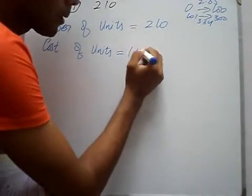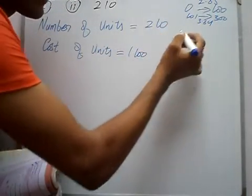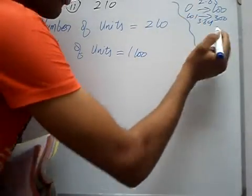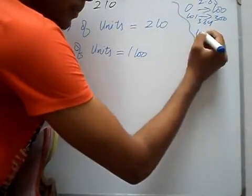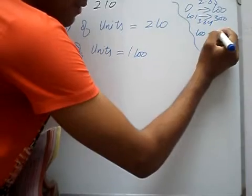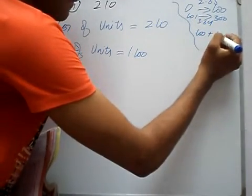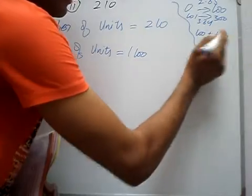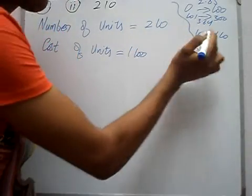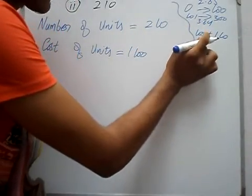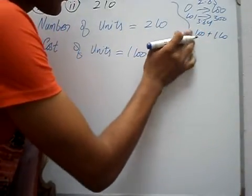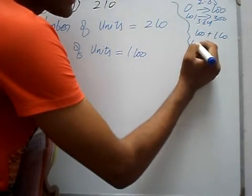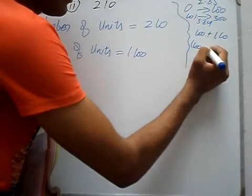These units are 210. We have two slabs. We break it: first 100 units, plus remaining 110 units. This is 210. First 100 — what will be the rate? Rate for 0 to 100 is 2.65.